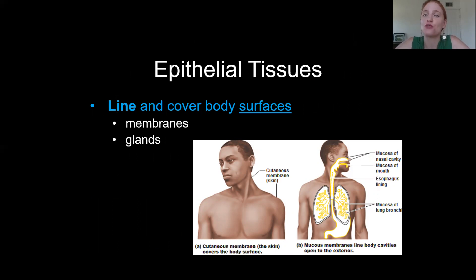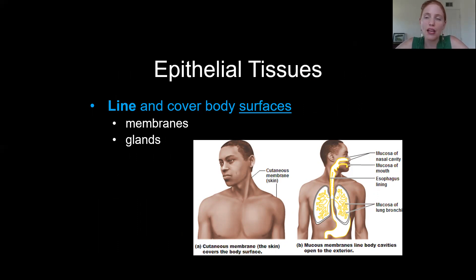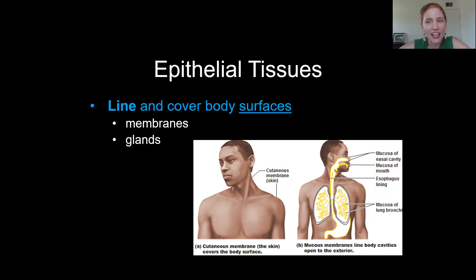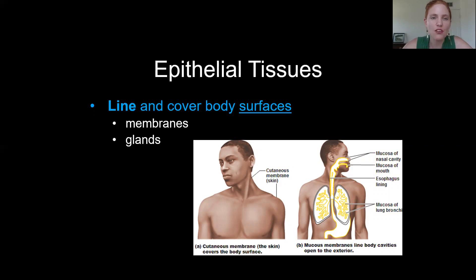Epithelial tissues line body surfaces. In lab, when you're trying to identify tissues from a picture, if you see a free surface — empty space — there must be an epithelial tissue lining it. You can use process of elimination: it can't be the other tissue types, so you have fewer choices. Think about strategies for narrowing down your choices to arrive at the correct answer more easily.